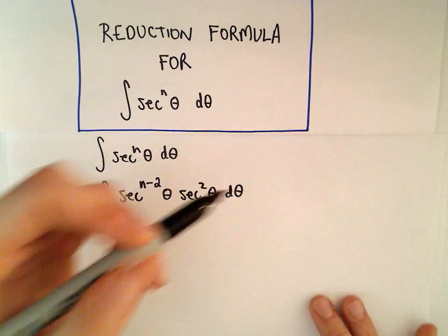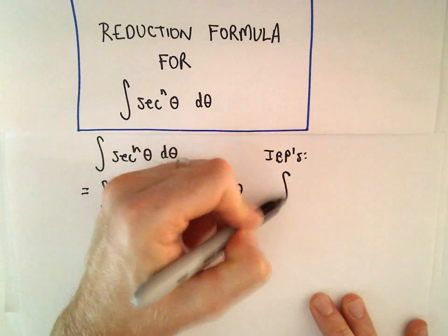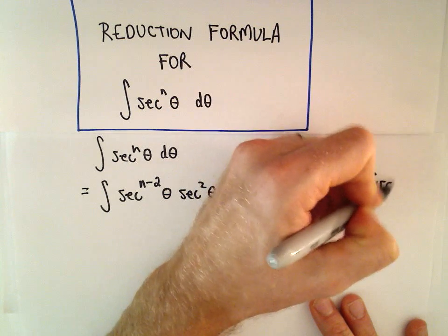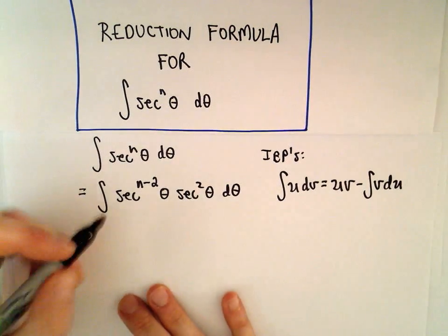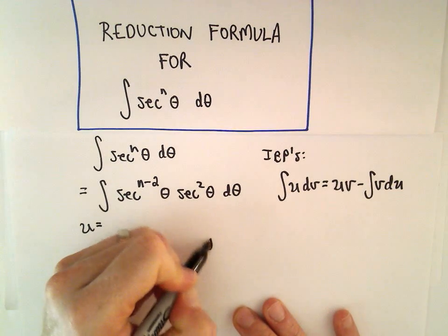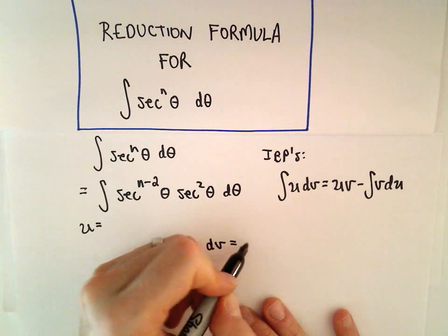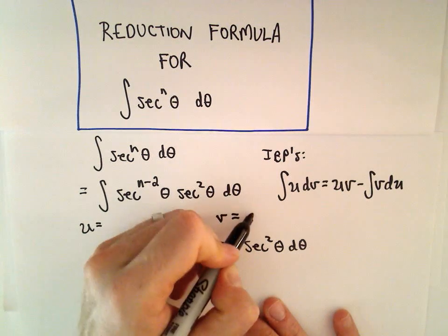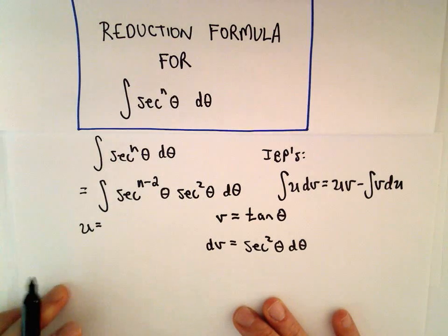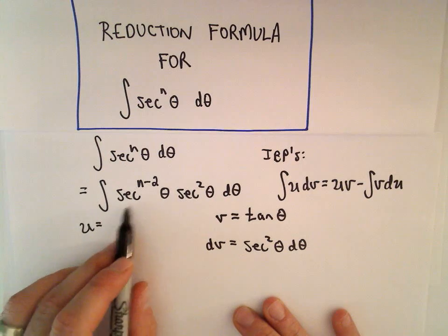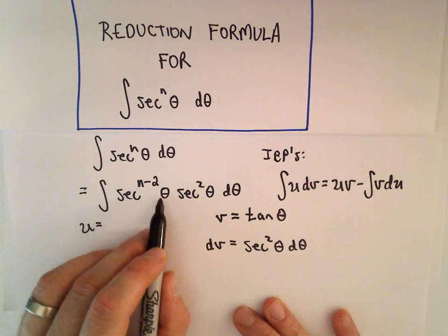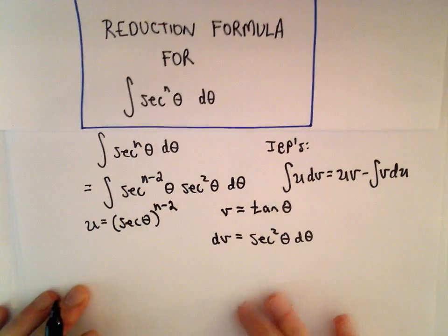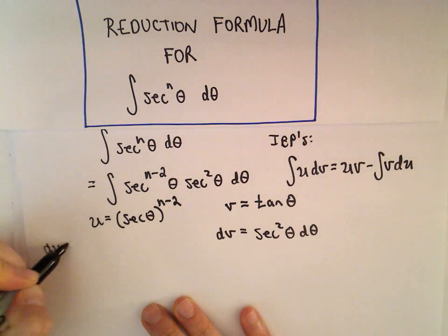We're going to use integration by parts, which says the integral of u dv equals u·v minus the integral of v du. We've got to pick something to be u and something to be dv. In this case, I'm going to let dv = sec²(θ)dθ, which gives us v = tan(θ). That means u = sec^(n-2)(θ). I'll write that as [sec(θ)]^(n-2) to remind myself that when I calculate du, I'll need to use the chain rule.